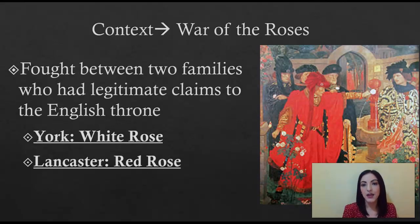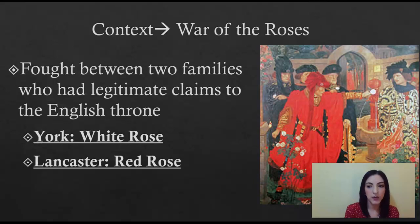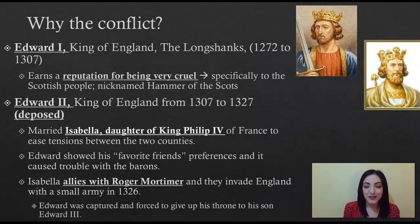So today we're going to go through the Protestant Reformation, shifts in monarchy, the counter-reformation — which is the church's response to the Protestant Reformation — as well as absolutism and the divine right of kings, and several monarchs who were practicers and believers of absolutism. The background has a lot to do with the War of the Roses in England.